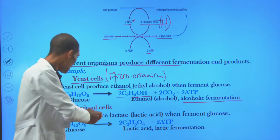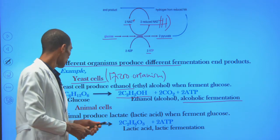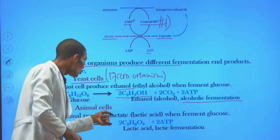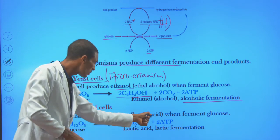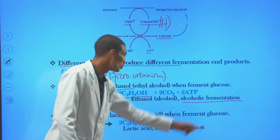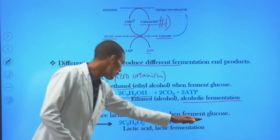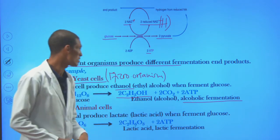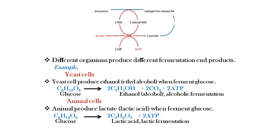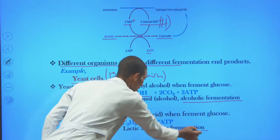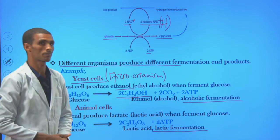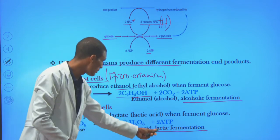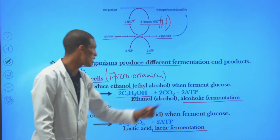In animal cells, animals produce lactate — considered as lactic acid — when they ferment glucose. Upon fermentation of glucose, animals end with lactic acid. There is no carbon dioxide produced here. The products are: glucose → lactic acid, 2 ATP, and 2 NAD. As a result, this type of respiration is called lactic fermentation. Lactic fermentation occurs in animals, while alcoholic fermentation occurs in microorganisms.